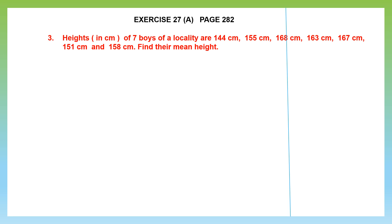The heights in centimeters of 7 boys of a locality are given to us: 144 cm, 155 cm, 168 cm, 163 cm, 167 cm, 151 cm, and 158 cm. So these are the heights of 7 boys of a locality.